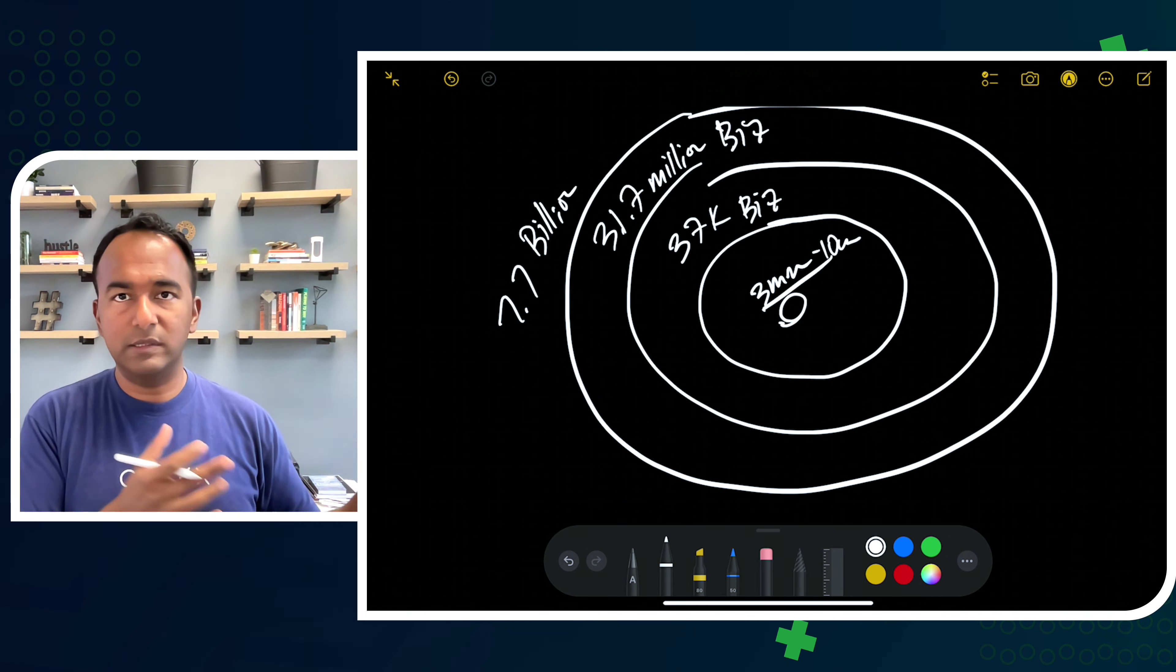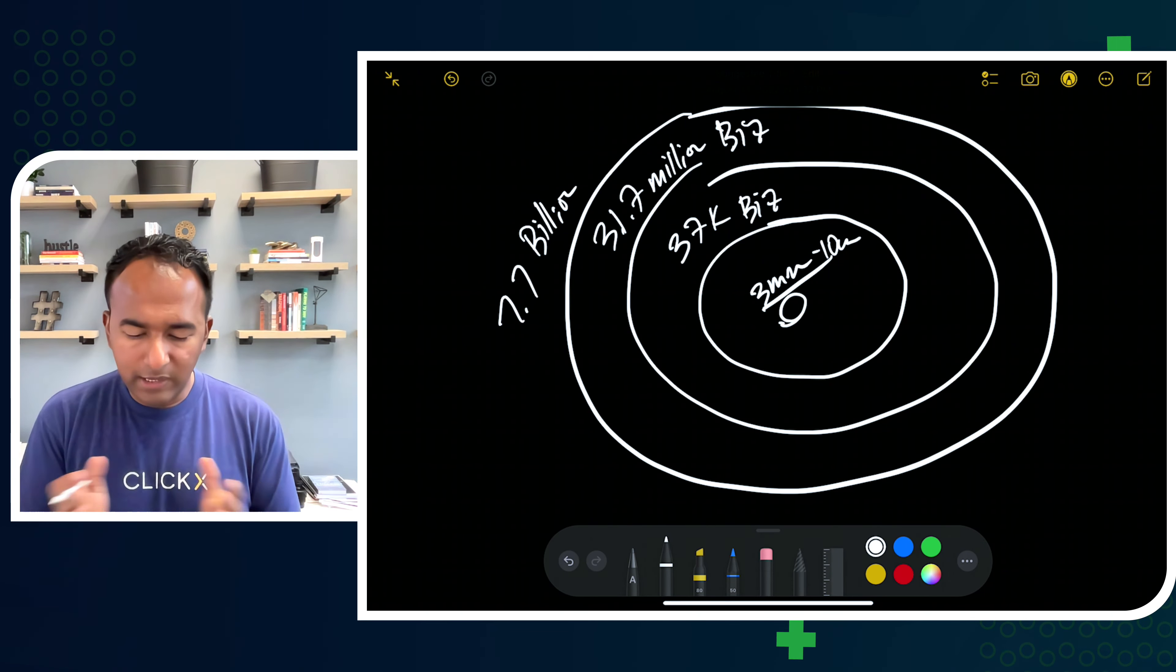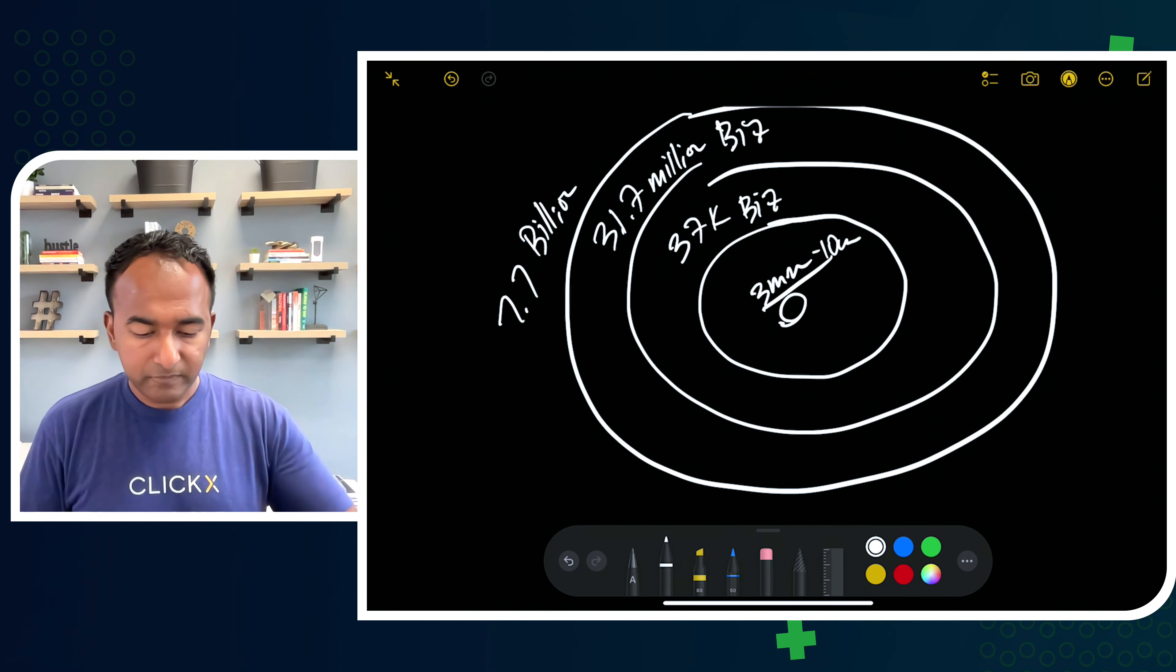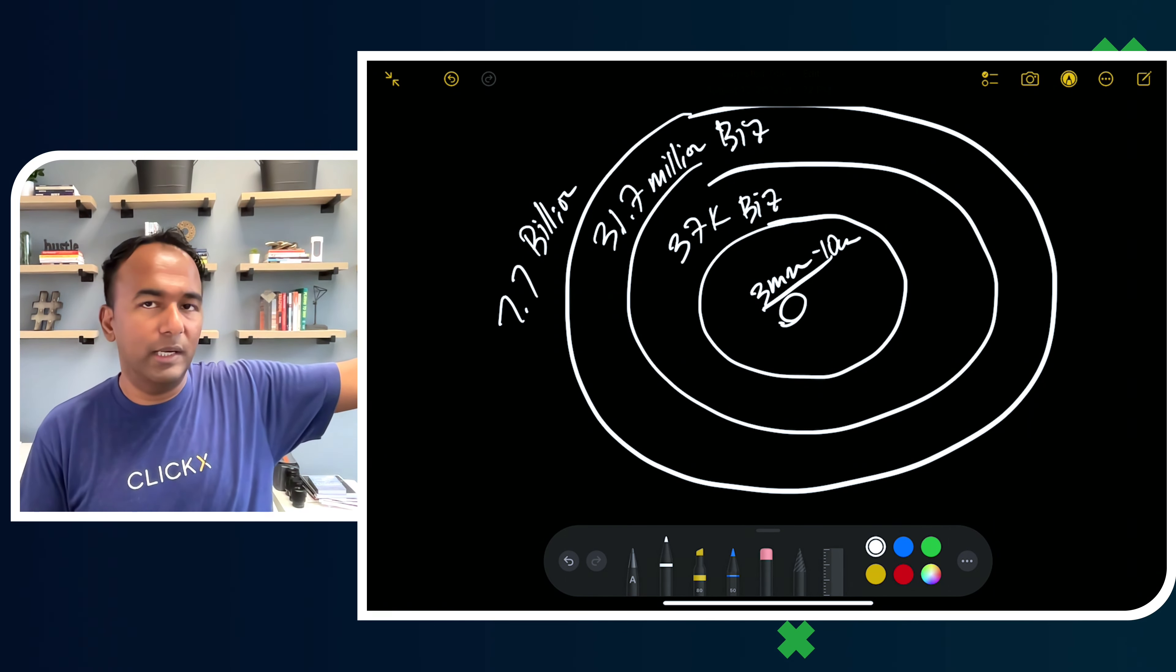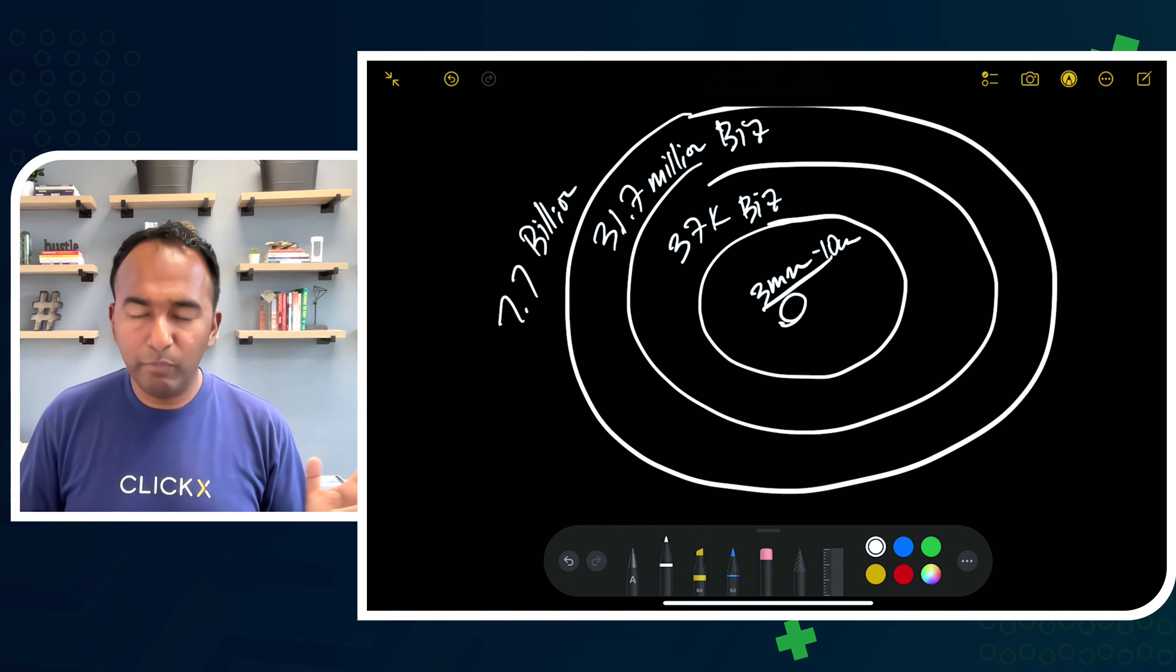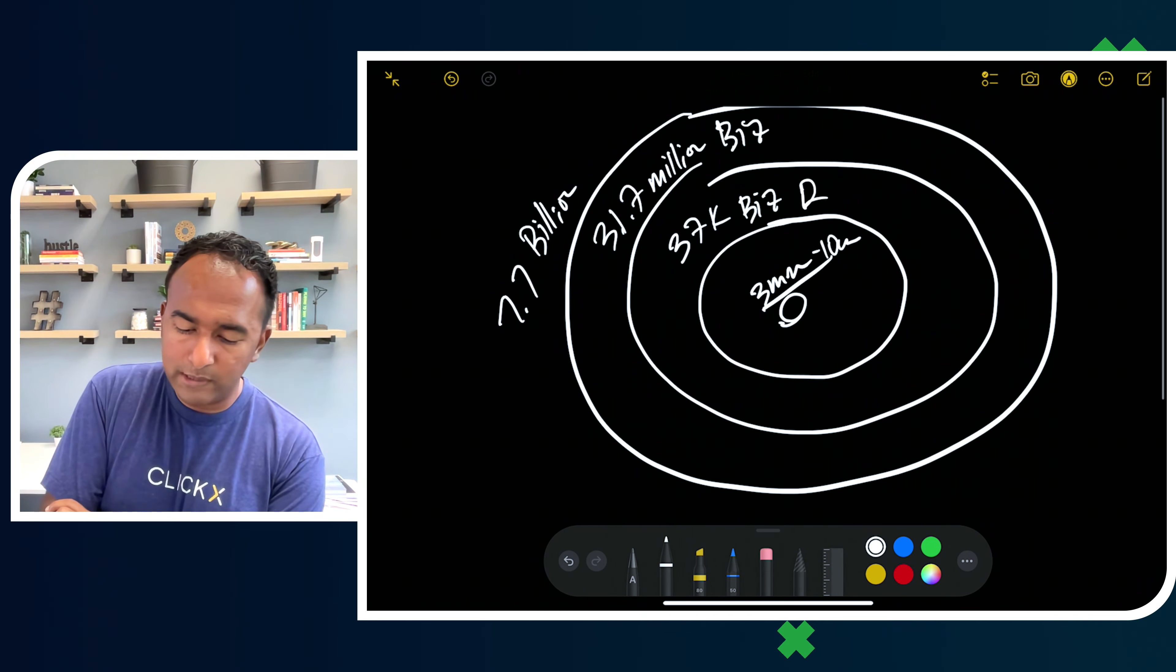You can further narrow this down more and more. You can say service business, manufacturing business, whatever that might be. But now we're getting somewhere from the 7.7 billion people that you could be serving, 31.7 million businesses, 37,000 in Rhode Island. Now that we know where our hometown is, we're going further and further down until we have our dot.